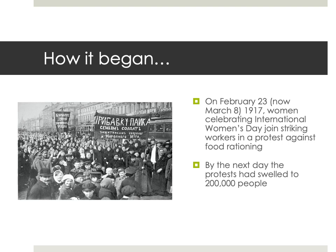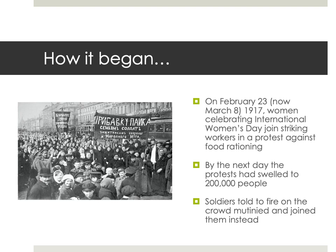By the next day, that protest had swelled to over 200,000 people, happening in the capital in St. Petersburg. The Tsar's government sent out soldiers to crush this protest, and some of those soldiers even had orders to fire on the crowd. Instead, they disobeyed those orders and mutinied, joining in on the protest. That really set everything off — this was what got the entire revolution going.